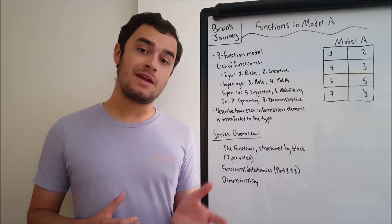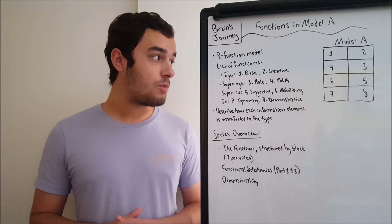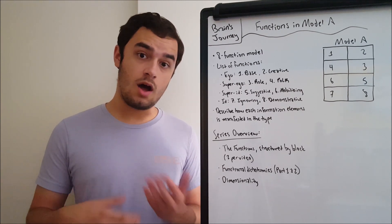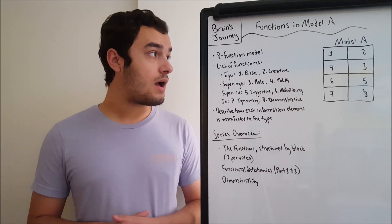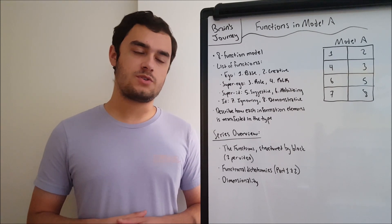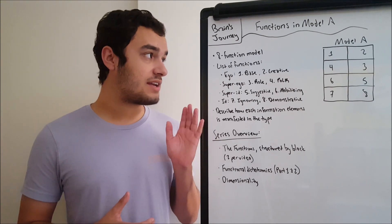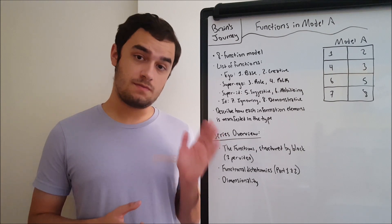So we've moved on from the information elements in the first series. We looked at all of them, looked at all of their dichotomies, the groups, everything that's not speculative. And now we're going to look at how those information elements are structured and displayed in Model A's functions.